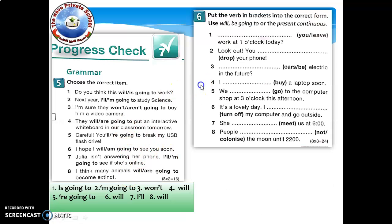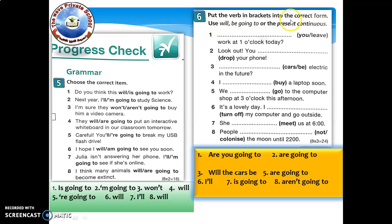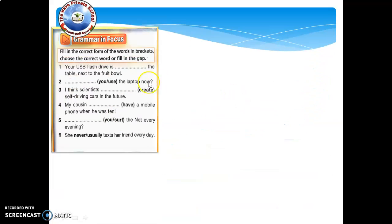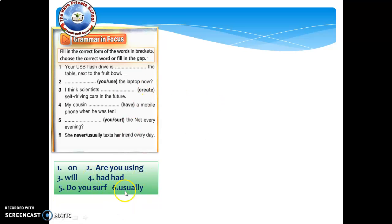And then here also on activity six, you have to put the verbs in brackets into the correct form. So here, just follow this one here, but include the action words like buy, go, turn off, meet, and colonize. So: are you going? Are you going to live? Work at one o'clock today? Please complete. Next we have grammar in focus. I have also given you the answers here, so fill in the correct form of the words in brackets, and then choose the correct word or fill in the gaps. Double check the sentences.